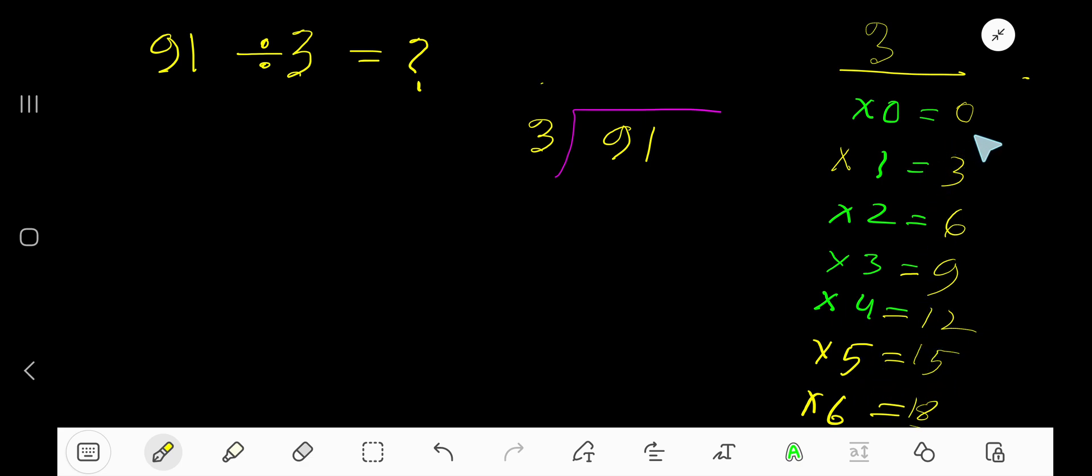To find out the multiplication table of 3, just add 3 with the previous step. 0 plus 3 is 3. 3 plus 3 is 6. 6 plus 3 is 9. 9 plus 3 is 12. 12 plus 3 is 15. 3 goes into 9 how many times? 3 times.